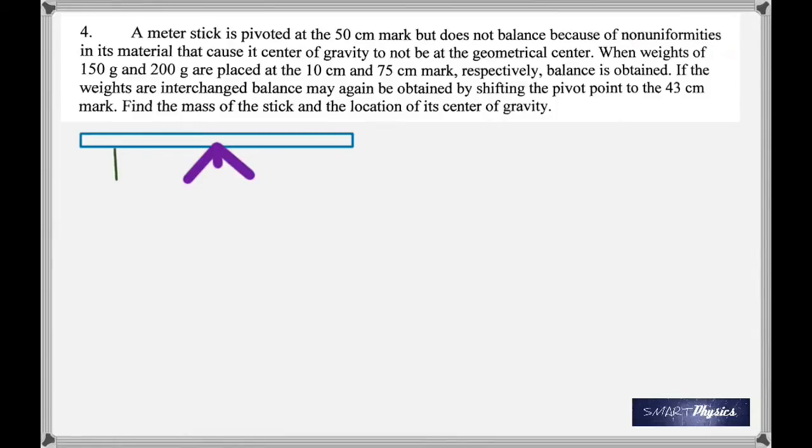A meter stick is pivoted at the 50 centimeter mark but does not balance because of non-uniformities in its material, which means its center of gravity is not at the geometrical center, which is 50 centimeters.